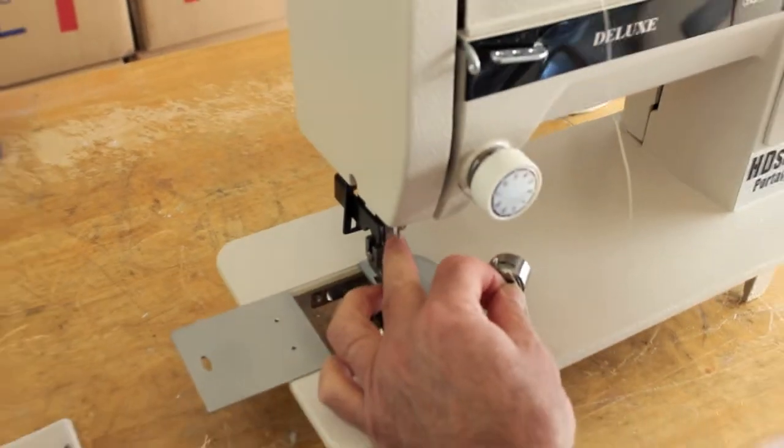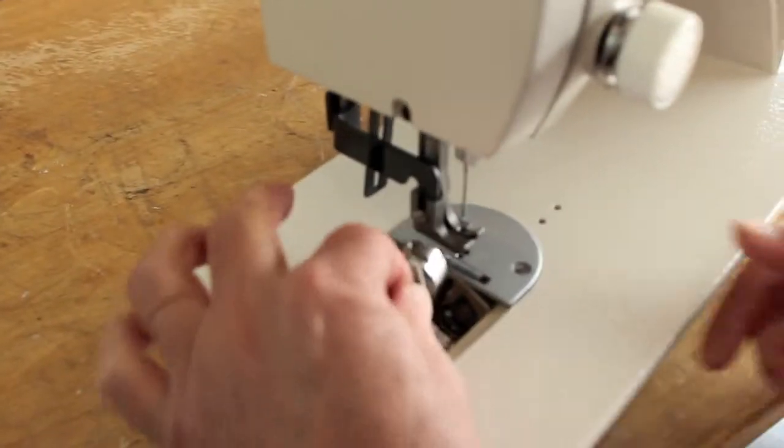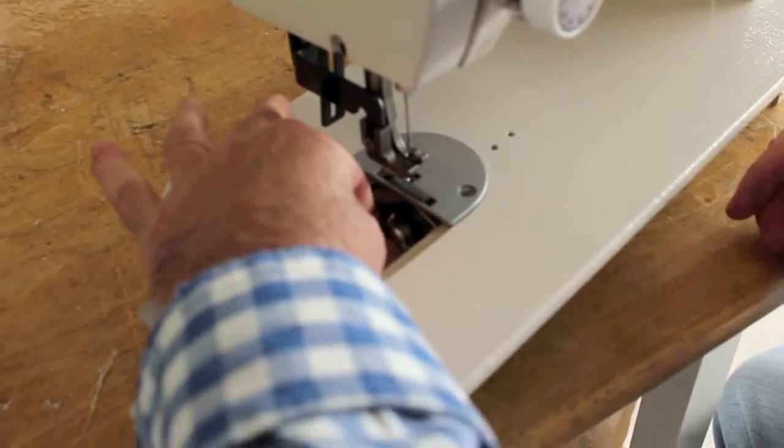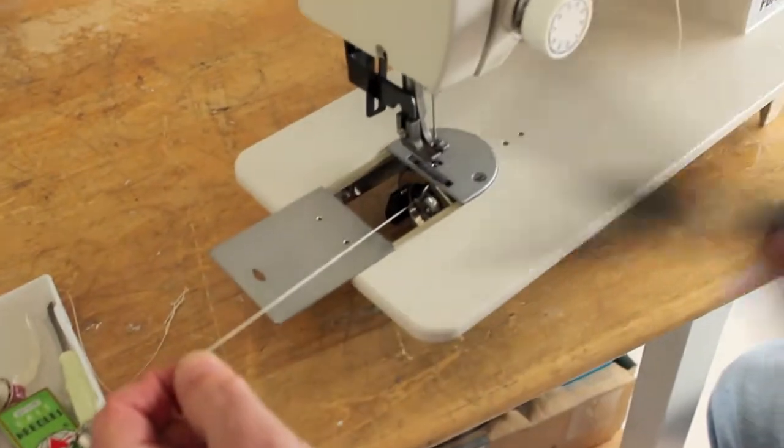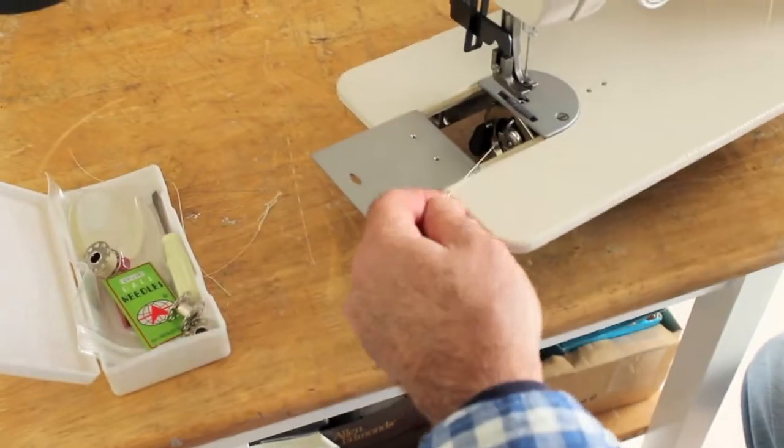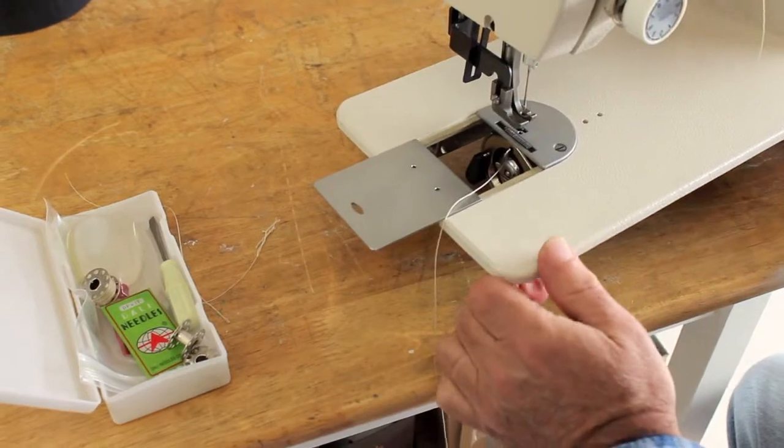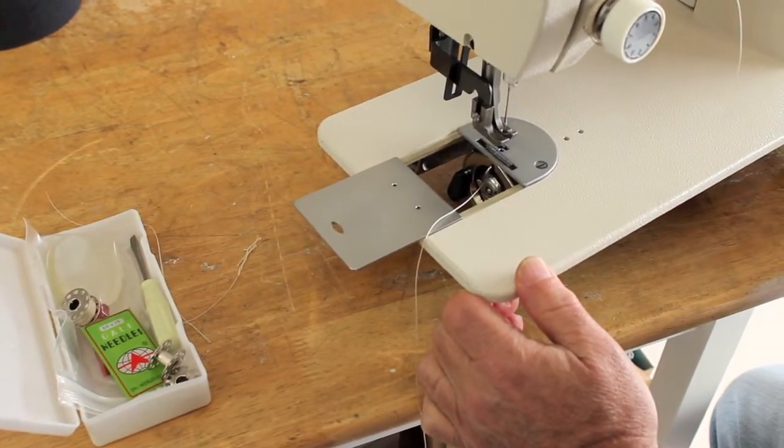So I'm rotating the needle to the up position and then put the bobbin case in the machine just like that and give yourself a tail of about six to eight inches just like that and that's how you put a bobbin case in the sewing machine.